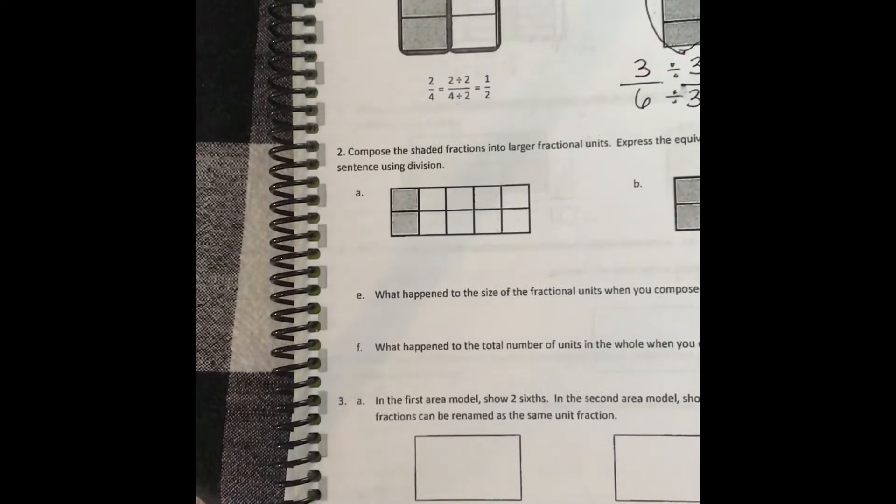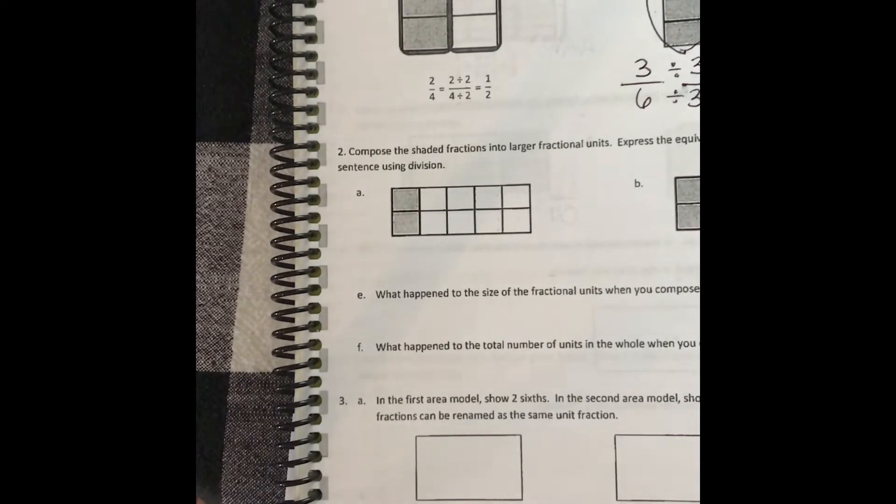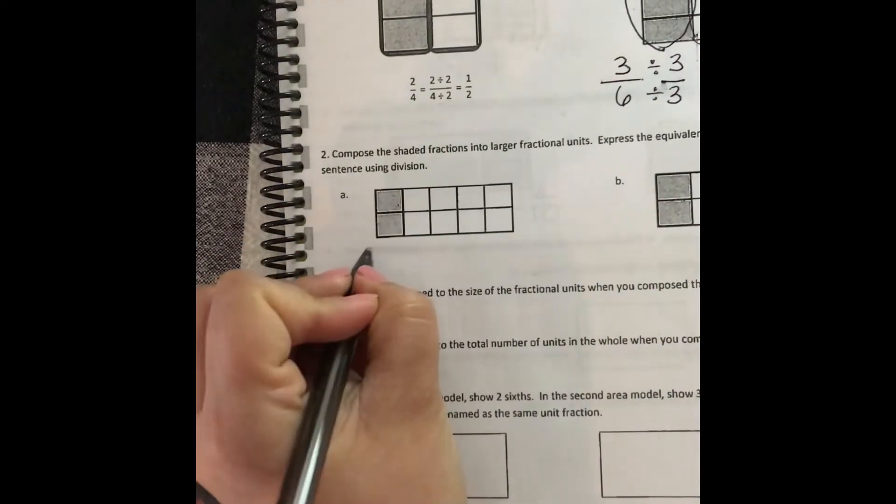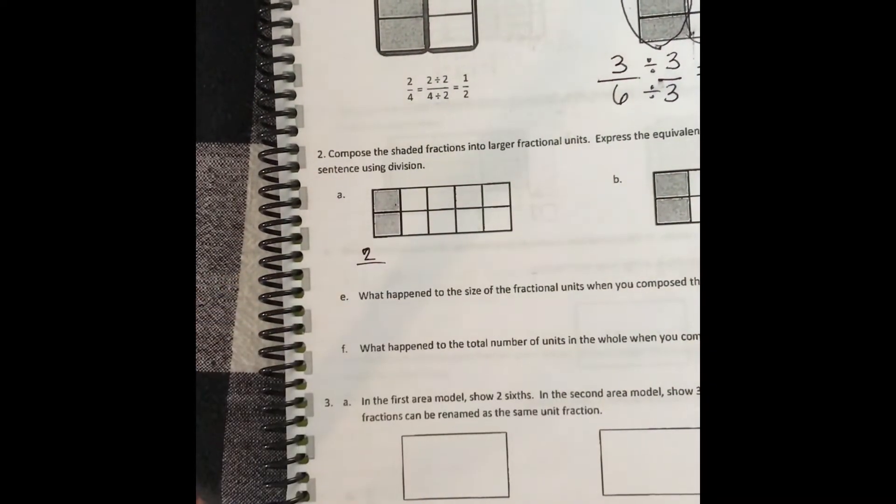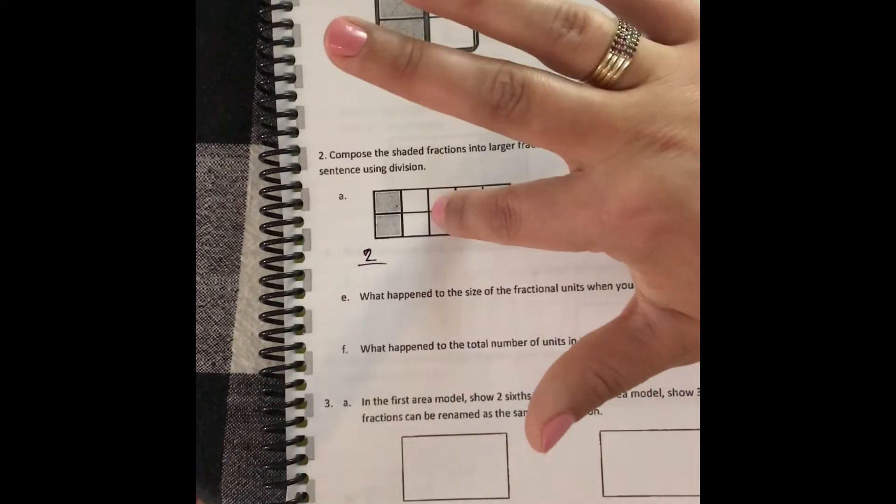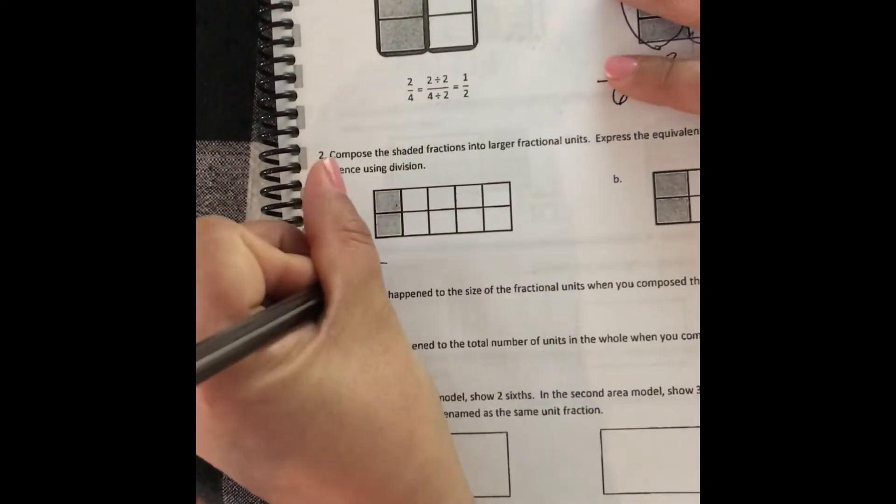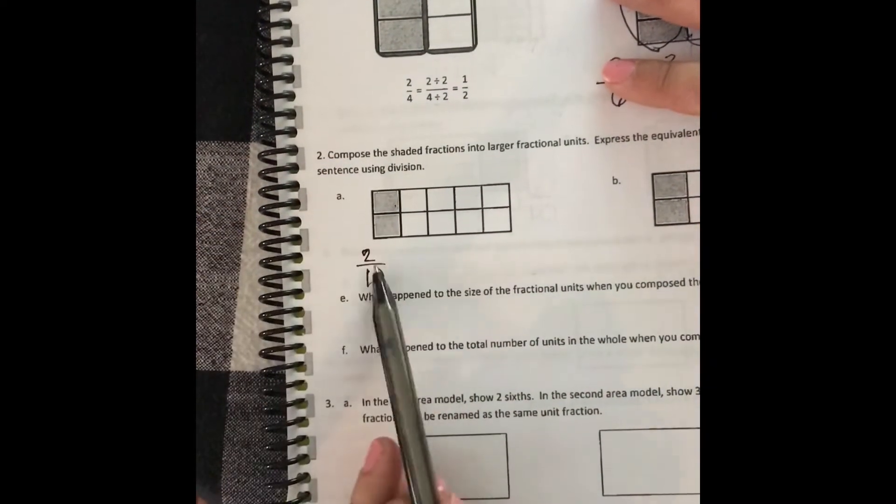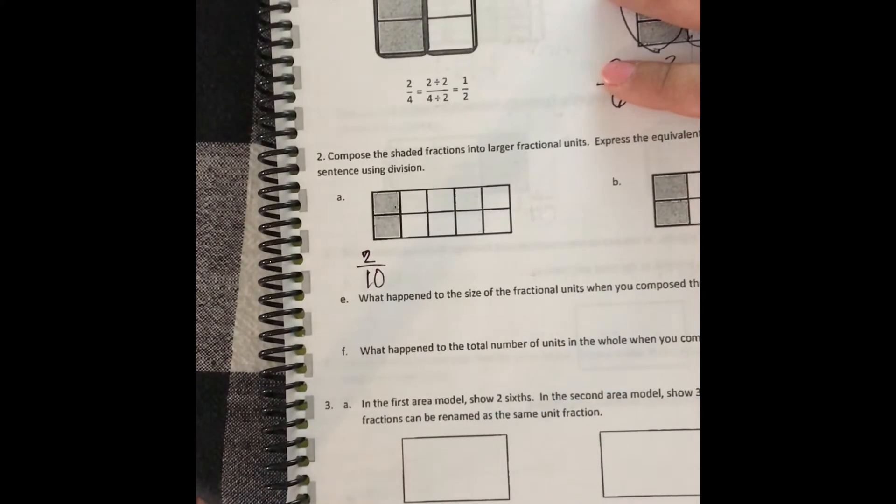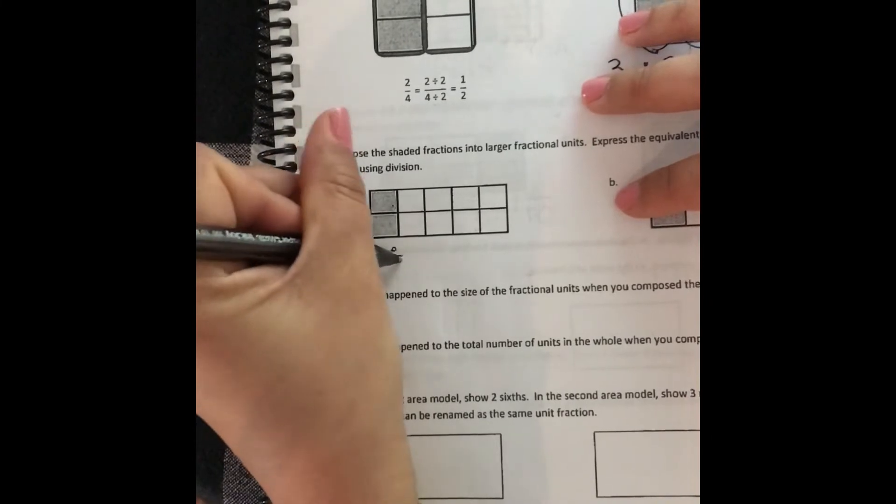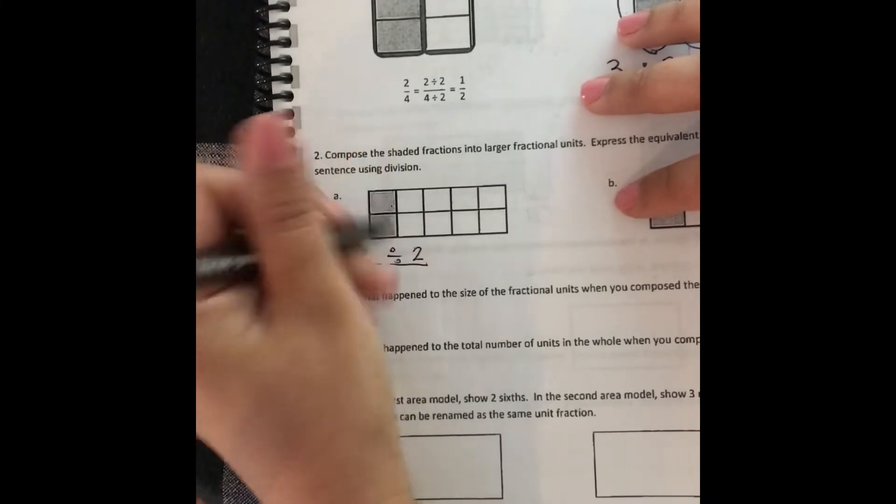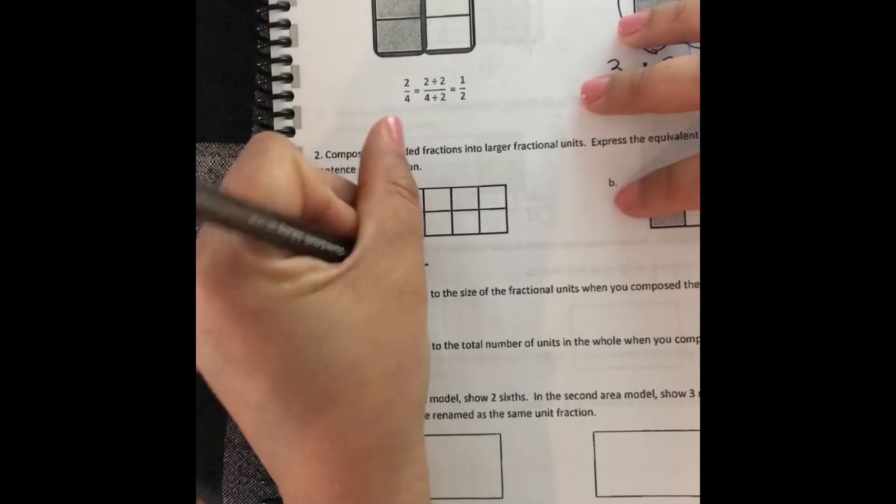Or you can use the model method to show the equivalency. So for this one, first we need to figure out what is our initial fraction. So we're going to figure out we have two colored in or shaded in out of how many? Two, four, six, eight, ten. Now I like to make groups of whatever my numerator is. So my numerator is two. Let's see if we can make groups of two, which means we're dividing by two. Whatever we do to the top, we do to the bottom.